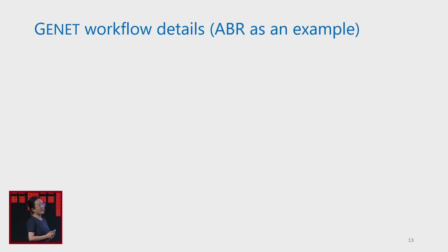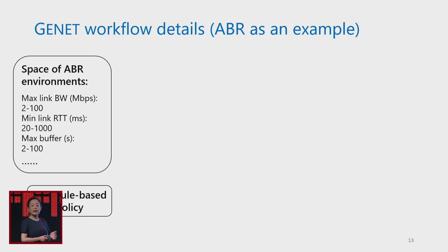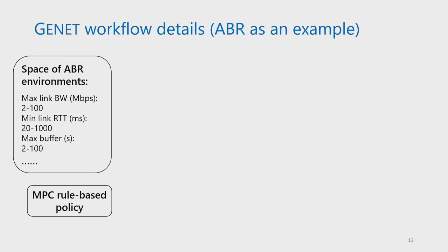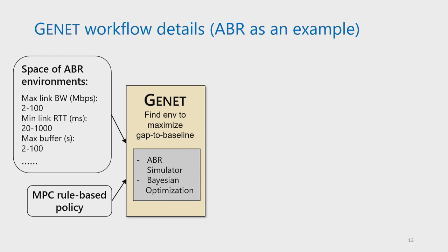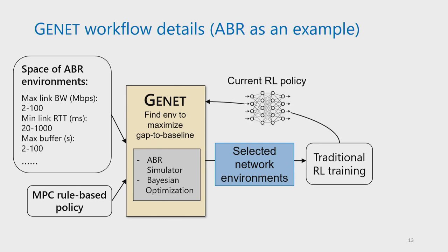Genet is the first to systematically introduce curriculum learning in networking applications. Using ABR as an example, all you need is a space of ABR environments with different parameters and ranges, plus a rule-based policy such as MPC. Genet will automatically create a curriculum for RL learning and select rewarding environments by Bayesian optimization, iteratively, until you have a more optimized RL policy. Genet is a general framework — as long as it's a networking application with RL, Genet can be applied.